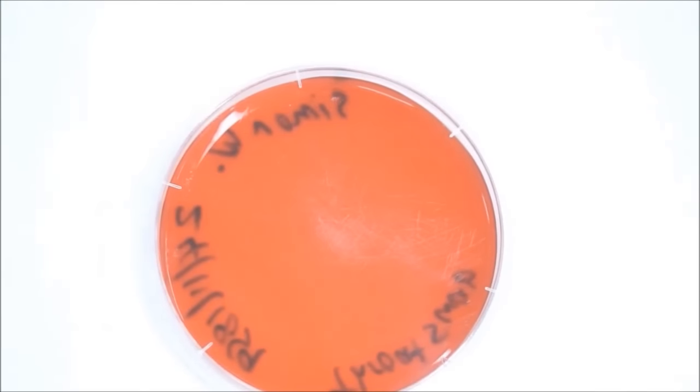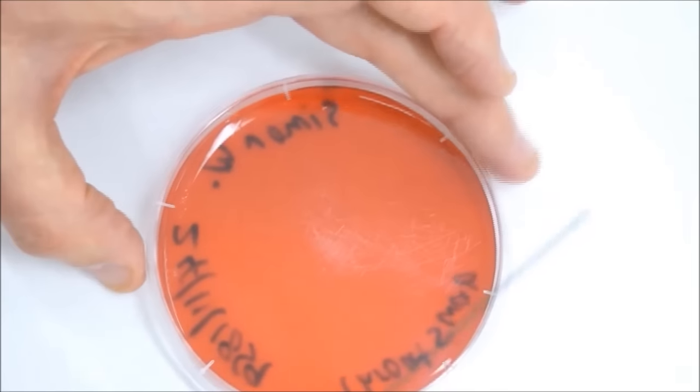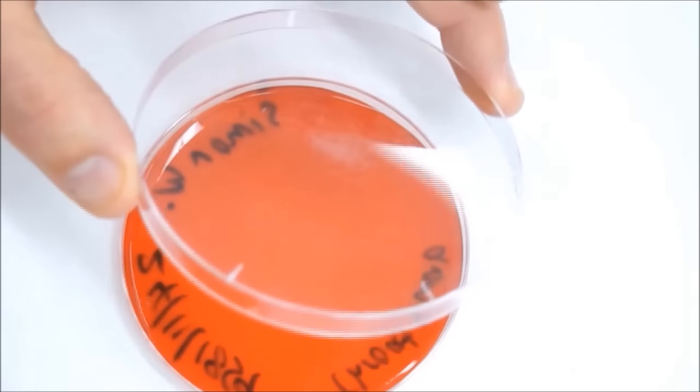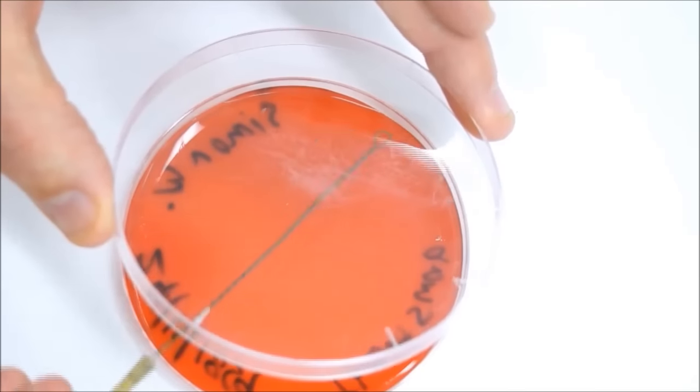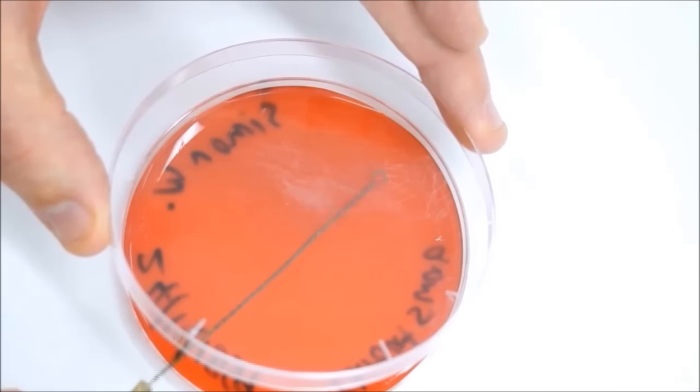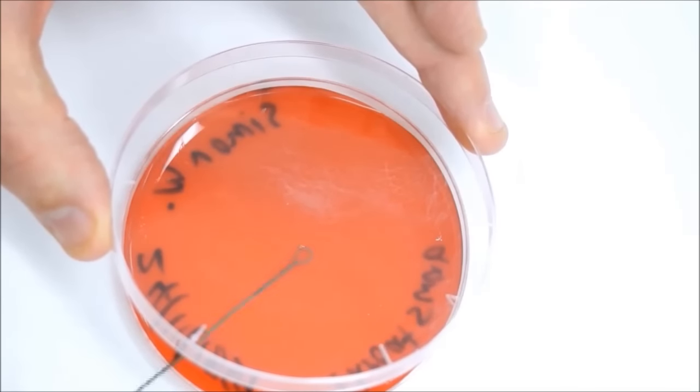Back to the Bunsen burner. Red hot. Turn the plate around again. Cool your loop down at the edge and one streak through where you've streaked before and streak down the plate. Again, we'll burn the loop just to be sure and get rid of bacteria.